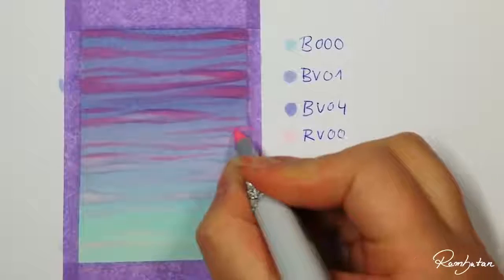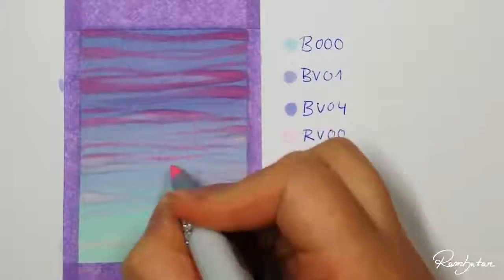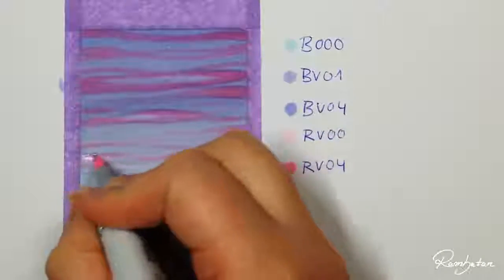You can blend this area now with RV00 so it looks more like it's fading into the brighter part of the picture.